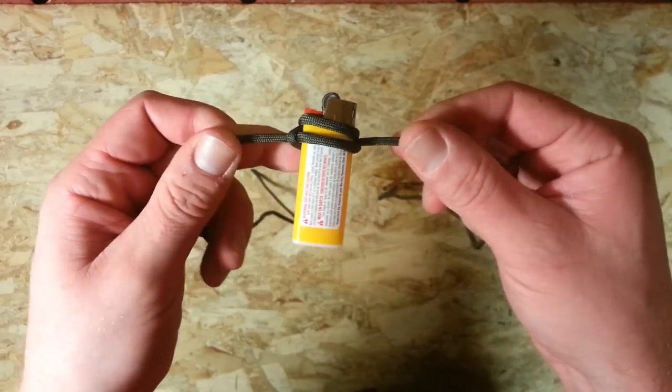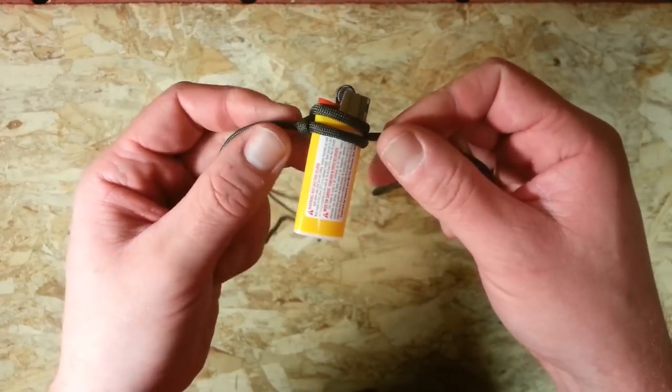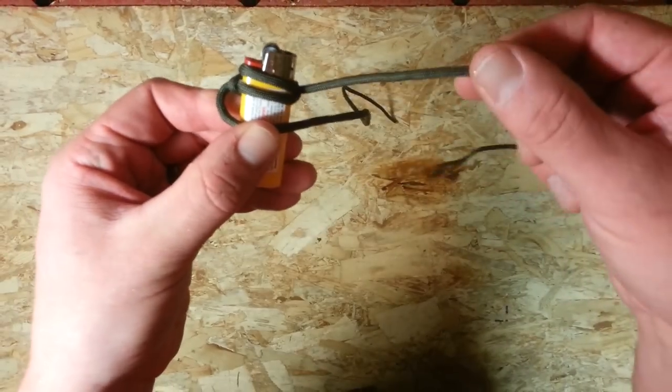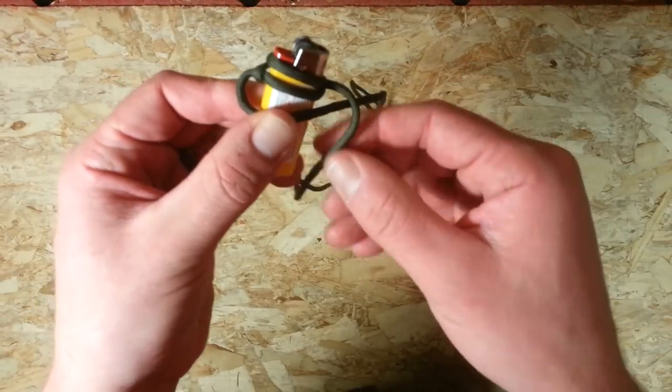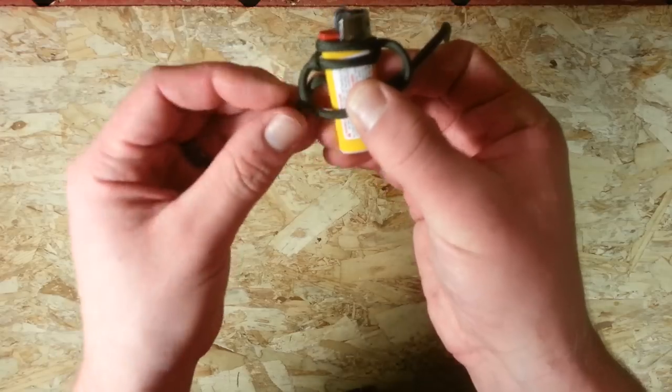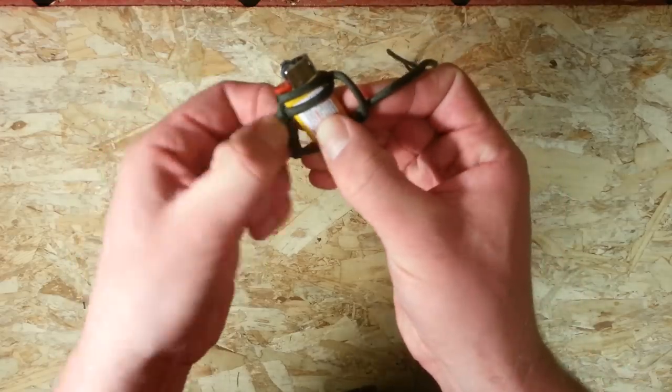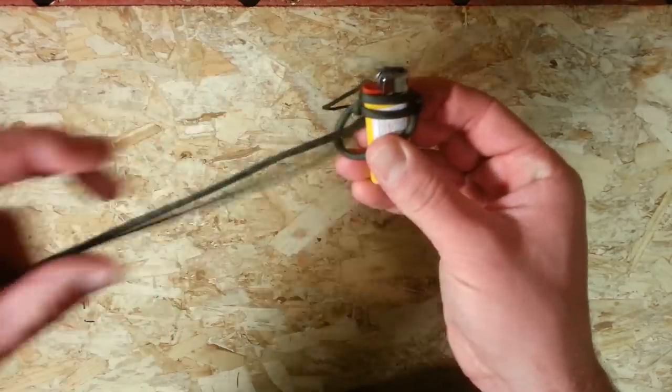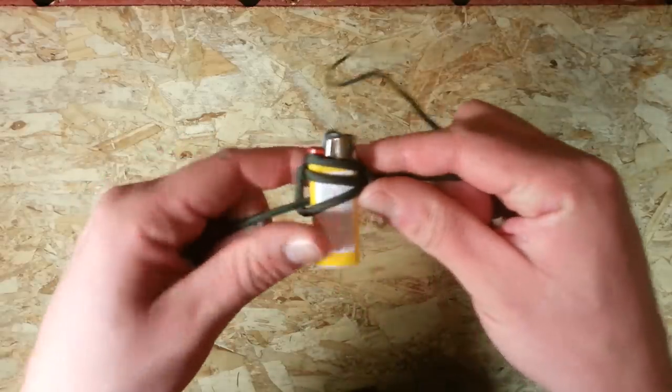We're just going to do the opposite and just do that a couple of times so you get the hang of it. Now going to go from the left side this time, bring the left hand strand across the front, right hand strand over the top of that and then across behind the lighter and up through that loop. And then just pull it really tight again.